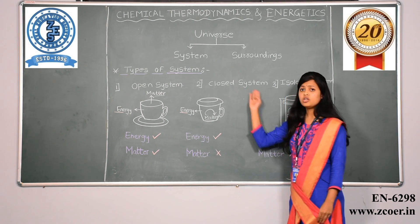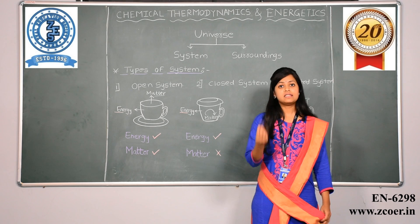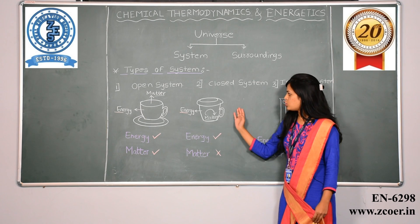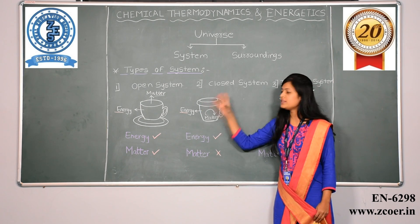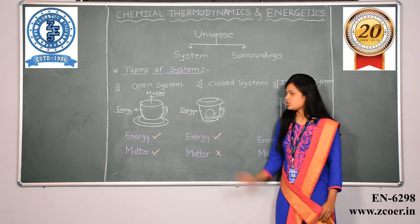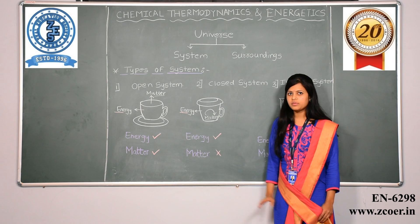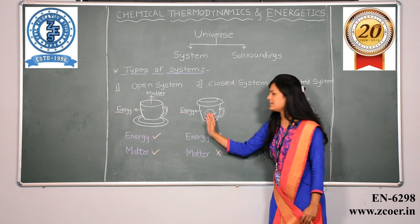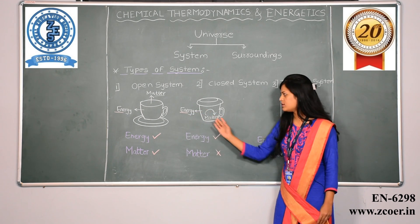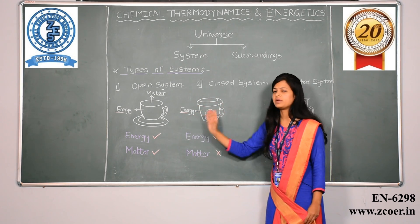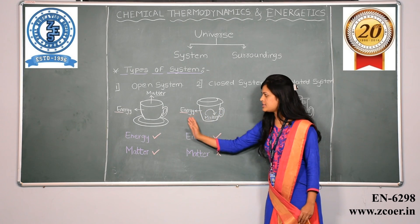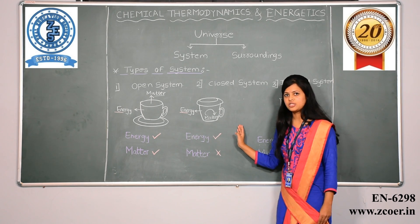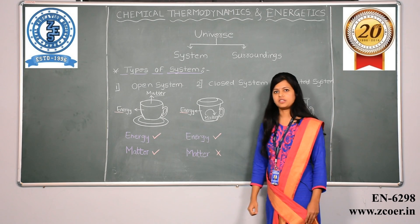The second type is a closed system. In a closed system we can only transfer energy whereas matter cannot be transferred with the surrounding. An example is a cup of tea with a saucer as a lid on top. The vapour coming out from the tea cannot be exchanged with the surrounding, but the heat energy of the tea can be exchanged with the surrounding, because even if it is covered up it is going to become cold after some time as all the heat energy is given out to the surroundings. So that type is called a closed system wherein energy can be exchanged but matter cannot be exchanged with the surrounding.